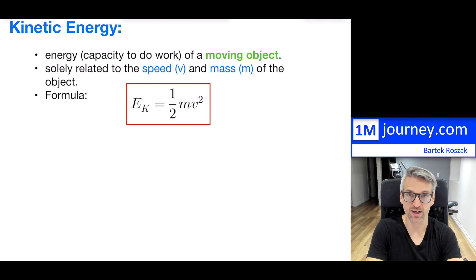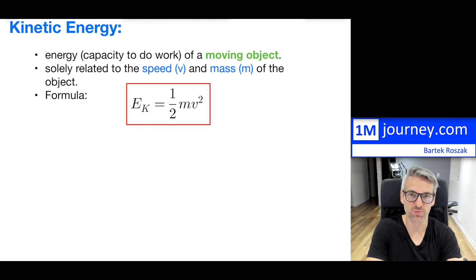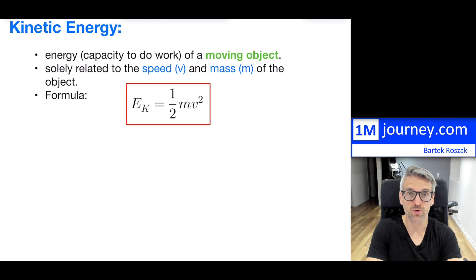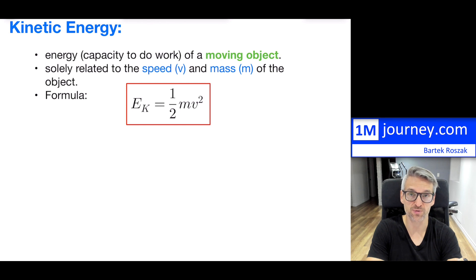Typically, this moving object is thought of as an external moving object — a runner who's running, a car which is moving, a bird which is flying, or a hammer which you're swinging. Those are all external items that we can sense in some way. Kinetic energy is related solely to the speed of that particular object and its mass. If there is no speed — if it's not moving at all — then it's not going to have any kinetic energy.